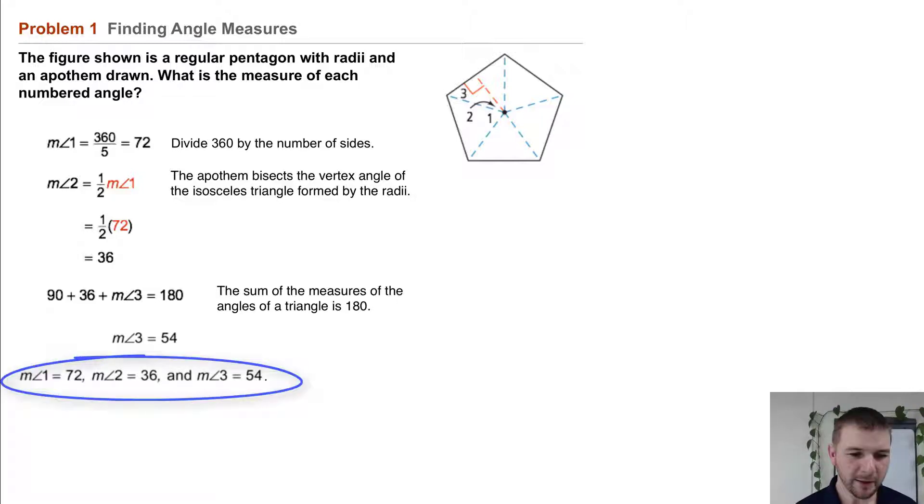So we can state the measure of angle 1 equals 72, the measure of angle 2 equals 36, and the measure of angle 3 equals 54.